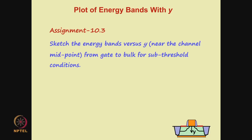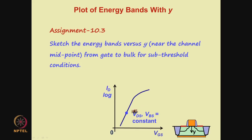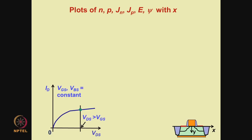Here is an assignment: sketch the energy bands versus y near the channel midpoint from gate to bulk for subthreshold conditions, that is for bias point 3 on the log Id versus Vgs graph. Now let us turn our attention to plots of n, p, jn, jp, E and ψ as a function of x. So far we were plotting quantities as a function of y, from the interface into the bulk. Now let us plot along the interface from source to drain.